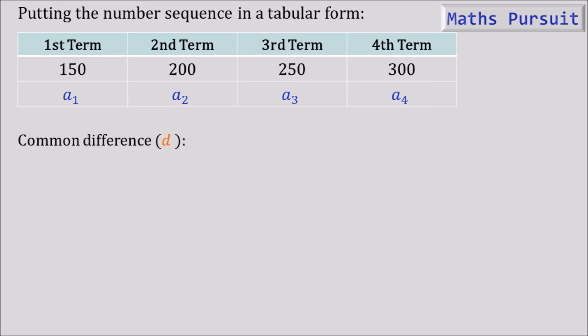Now let us find out the common difference. We need to find out the common difference so that we can understand whether the generated number series is forming an arithmetic progression or not. So a₄ minus a₃ equals 300 minus 250, that is equal to 50. That means 4th term minus 3rd term.